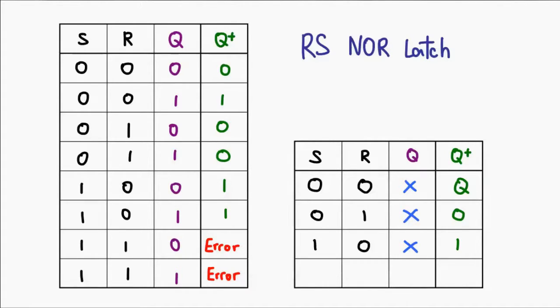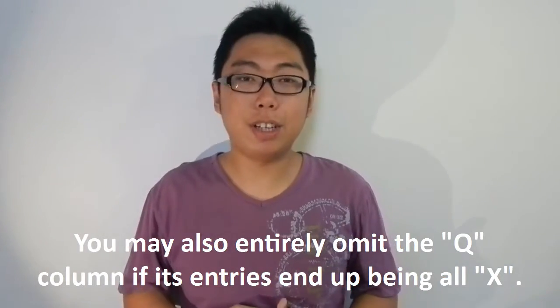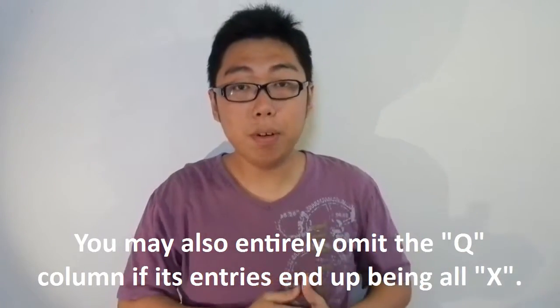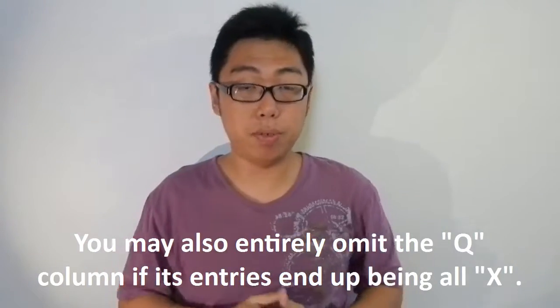Same goes for the error condition. Whatever the internal state is, if you actually set both inputs to 1, you will get an error. What this means is we've actually shrunk an 8-row truth table down to a 4-row truth table. And this same technique can actually be applied to the rest of the truth tables as well.